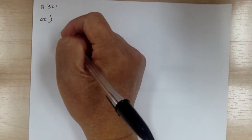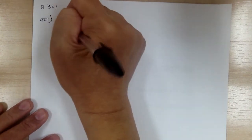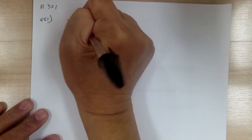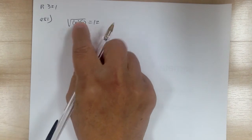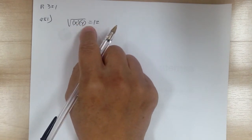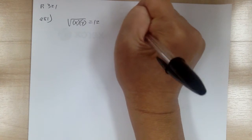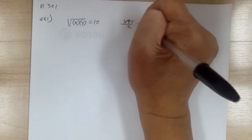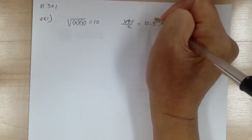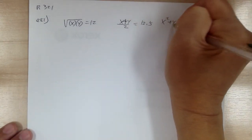For 481, it says two numbers x and y have a geometric mean of 12. Geometric mean means you multiply and take the square root, so geometric mean is 12. And arithmetic mean — that means x plus y over 2 — equals 12.5. So you're looking for x squared plus y squared.